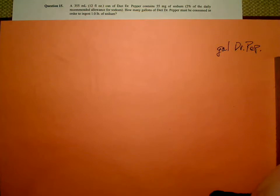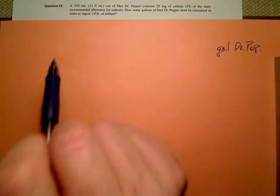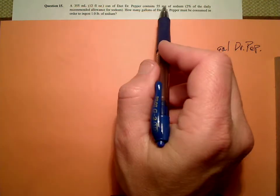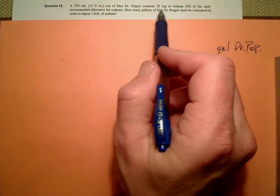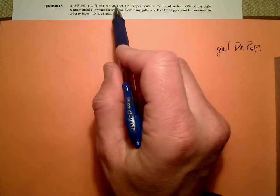What do we know? Well, we know we have a can that has a volume of 12 fluid ounces. Look at this, right here, here's a conversion factor. I know that's not a conversion factor, but we know that there are 55 milligrams of sodium, oh yeah it is, per can.